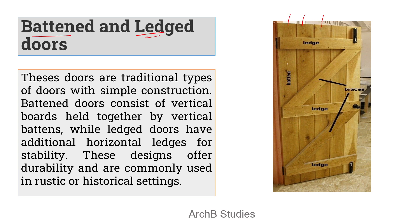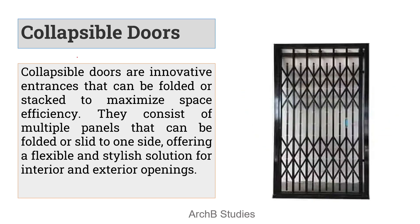Next is batten or ledged doors. The vertical members are called battens, and a door made only with battens is called a batten door. A door made with ledges only is called a ledged door. When both battens and ledges are combined, it is called a batten and ledge door. Braces — inclined members — are added for stability and strength. These are mostly used in farmhouse or old building settings.